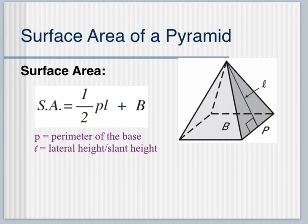To calculate the surface area of a pyramid, your equation is surface area equals one-half times perimeter times lateral height plus area of the base, one-half PL plus B.